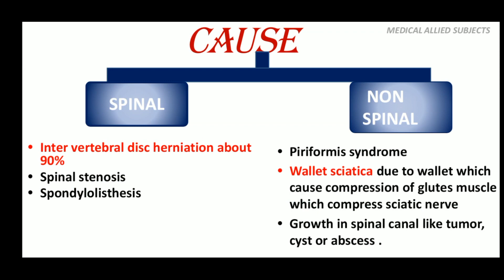The causes of sciatica are divided into spinal and non-spinal. Intervertebral disc conditions are the most important cause. Spinal stenosis is the narrowing of the spinal canal, and spondylolisthesis is a spinal disorder in which a vertebra slips forward on the lower vertebra. Non-spinal causes include piriformis syndrome, where the piriformis muscle in the buttock irritates the sciatic nerve. Wallet sciatica is due to continuous sitting on a wallet which compresses the gluteus muscle and further compresses the sciatic nerve. Some extra growths like tumour, cyst, or abscess can also be causes.